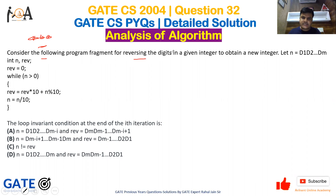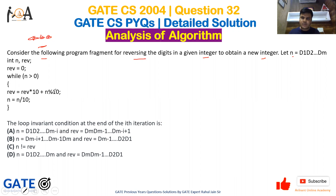The question is: consider the following program fragment for reversing the digits in a given integer to obtain a new integer. Let n = d1 d2 ... dm. The program fragment is: integer n, rev (initially initialized with zero), while n is greater than zero — rev equals rev into 10 plus n modulus 10, n equals n divided by 10.